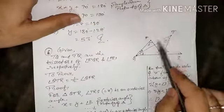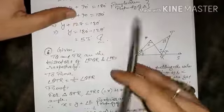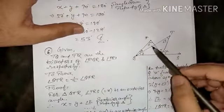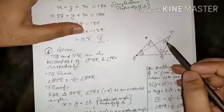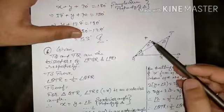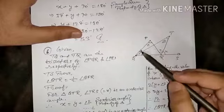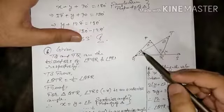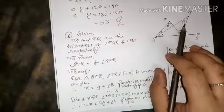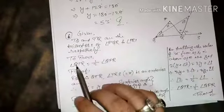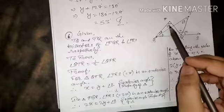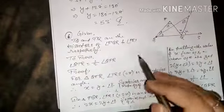The angle bisector divides the angle into two equal parts. I also named these two angles as angle 1 and angle 2. So angle PQR is divided into two equal parts — Y and Y, and X and X. What we have to prove is that angle QTR equals half of angle QPR, meaning this angle is going to be half of this angle.